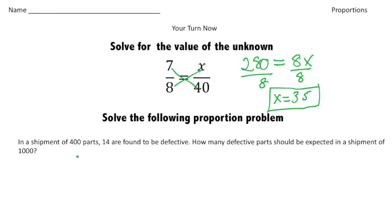So it says in a shipment of 400 parts, 14 are found to be defective. Defective means that they don't work. How many defective parts should be expected in a shipment of 1000?